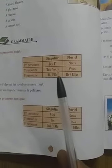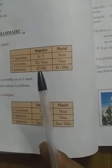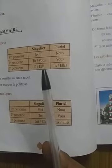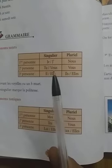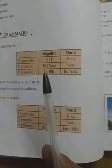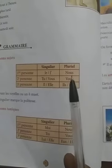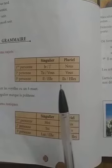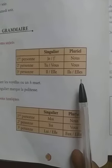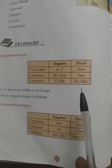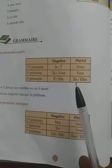Subject pronouns: 'Je' — I, first person singular. 'Tu' — singular, informal. 'Vous' — plural or formal singular; use 'vous' for elder or unknown persons to show respect. Third person: 'Il' — he, 'Elle' — she, plural 'Ils' and 'Elles'. Just add S to the singular to make it plural. Meanings are given — note them down and memorize.